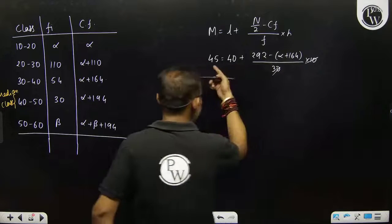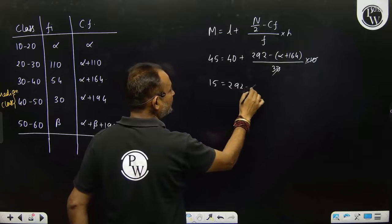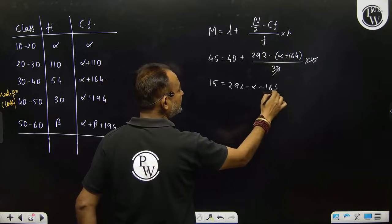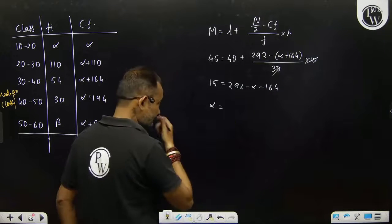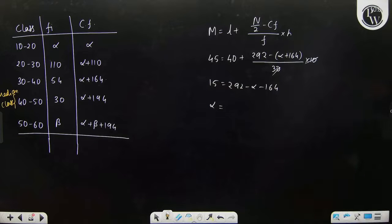Cancel it, this will be 5 into 3, 15. 292 minus alpha minus 164. Solving this expression you will get alpha equal to 113.